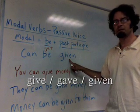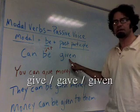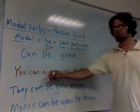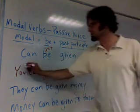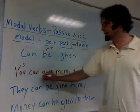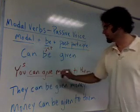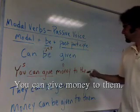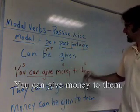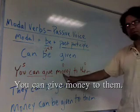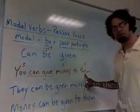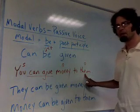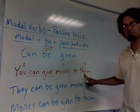Give, gave, given. In this sentence, the subject is 'you.' You can give money — that's the direct object — to them, the indirect object. And it's in the active voice.